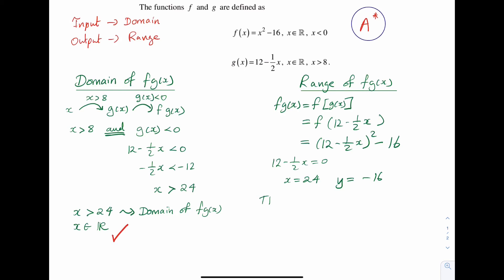So the coordinate for the turning point is just 24, minus 16. We have a positive quadratic so the shape will be a U shape. And we're going to sketch it for the restricted domain: x is greater than 24, x is an element of the real number set.